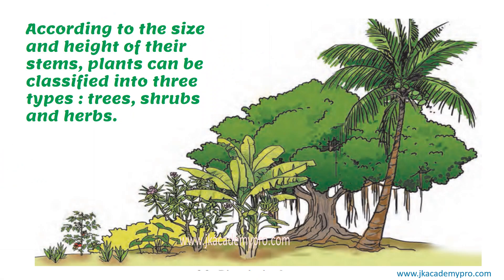So we have seen that according to the size and height of the stems, plants can be classified into 3 types. One are the trees — they grow very tall, the trunk is strong and hardy, and the branches spread out high above the ground. Then we have the shrubs — shorter, with a hard trunk but branches that grow at our height level. And the third type is the herbs, which have very soft and flexible stems. Most of the small plants we consume — pudina, coriander, palak — are herbs.